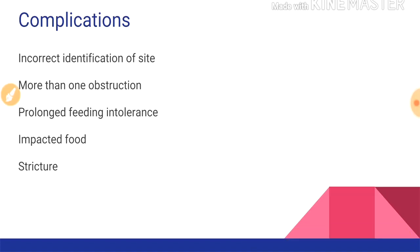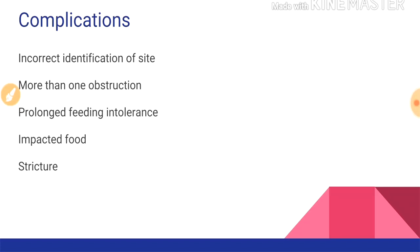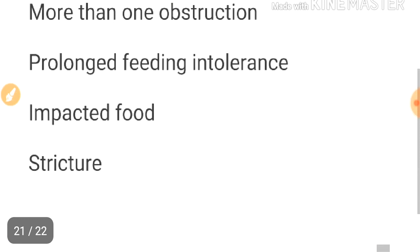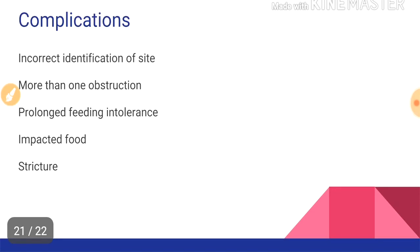Postoperative complications include prolonged feeding intolerance due to the functional defect and atony of the duodenum. In cases where only partial web excision was done, impacted fibrous food material can block the partially corrected web. Also, as the child grows, if the anastomosis does not increase in size correspondingly, it can result in stricture. In case of atony, tapering of the duodenum is required; in case of stricture, a duodenojejunostomy may need to be considered.